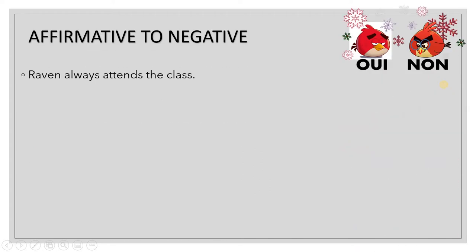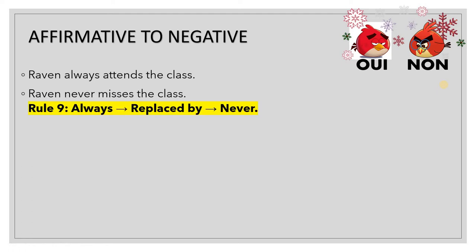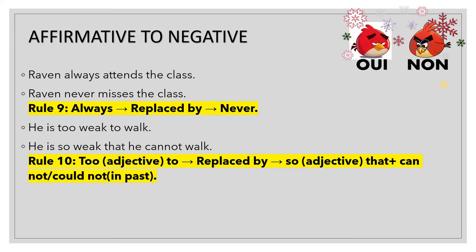'Raven always attends the class' becomes 'Raven never misses the class' — opposite words: always and never. Next, 'He is too weak to walk' becomes 'He is so weak that he cannot walk.' The affirmative form uses 'too adjective to,' and when changed to negative it is replaced by 'so adjective that' plus 'cannot' or 'could not' depending on tense.